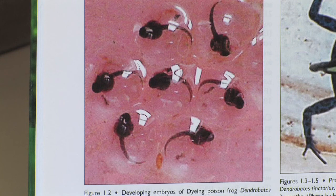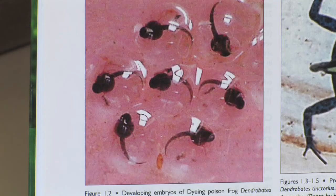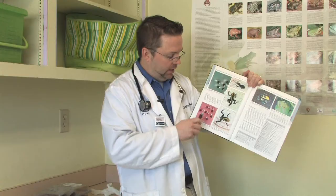Once those are formed, that egg mass is broken and these little tadpoles are released. They have no front legs or rear legs at that point — just a tail and gills to breathe from.